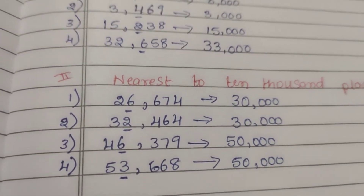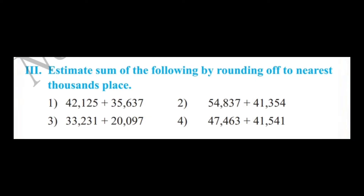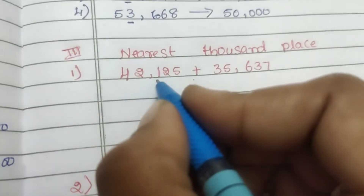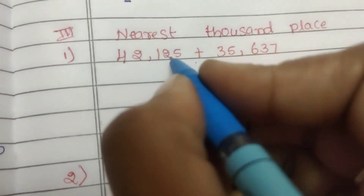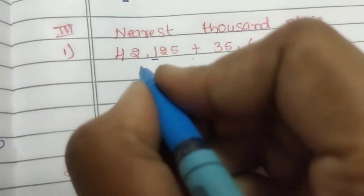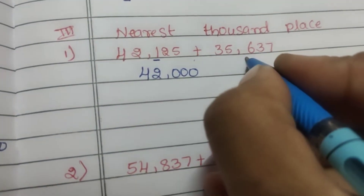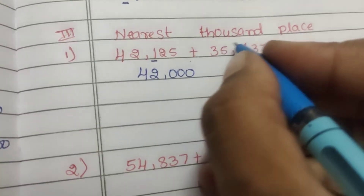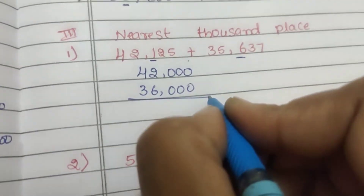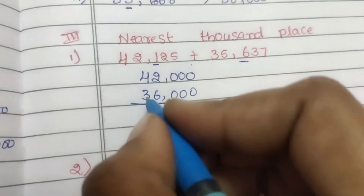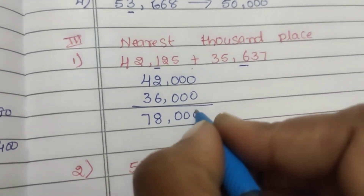Third: estimate the sum of the following by rounding off to the nearest thousands place. First question: 42,125 plus 35,000 — this is 37,000. This is the number of thousands place. 42,000. The number 5 is less than 50,000, so this rounds to 36,000. Add: 2 plus 6 is 8, 4 plus 3 is 7. Answer: 78,000.